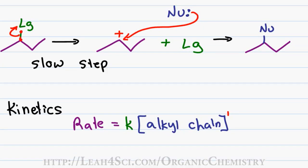So what is a first order reaction? It's a reaction whose rate will change dependent on the concentration of the alkyl chain. This means if you double the concentration of your starting carbon molecule, the reaction rate will double. If you triple it, the reaction rate will triple. However, because the nucleophile is not part of that rate determining step, if you double or triple the concentration of the nucleophile, you'll see no change in the speed of your reaction.